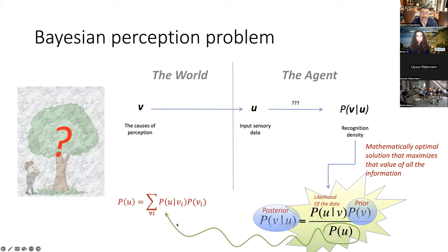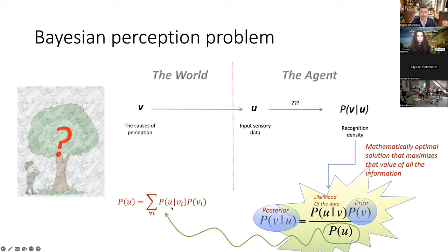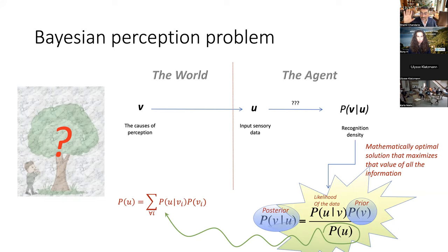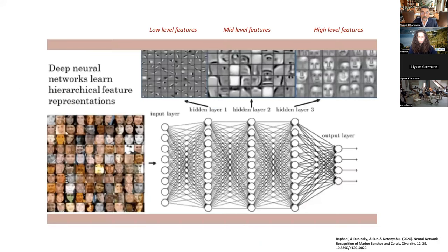That normalizing term is very difficult to compute - it's an infinite integral. You basically have to go through every single hypothesis: this sensory data could be caused by a tree, could be caused by a mountain, could be caused by some sort of hallucination. You couldn't possibly do it - it's computationally explosive. Although Bayes' theorem is the mathematically optimal solution that maximizes the value of all information, we cannot solve it. We cannot solve it using machine learning because it's computationally explosive, and evolution cannot solve it - biological beings cannot solve it explicitly.